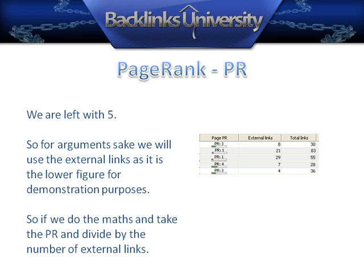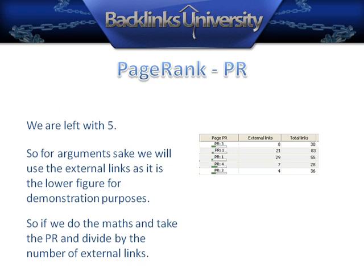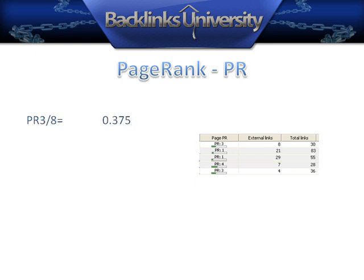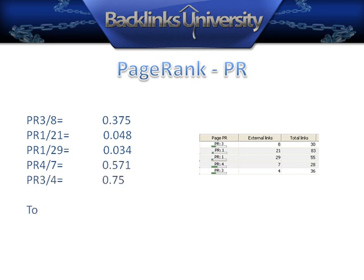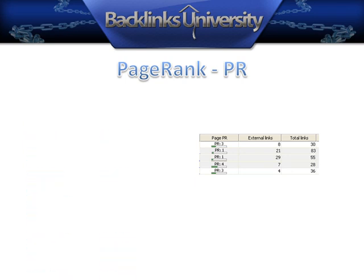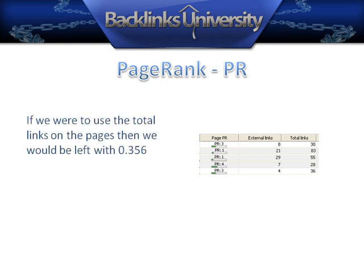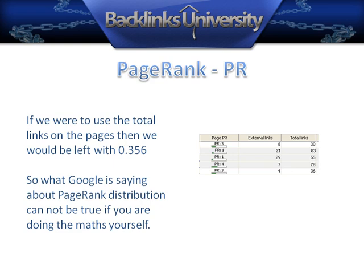So if we do the maths and take the PR and divide by the number of external links, as you can see the numbers just do not add up. If we were to use the total links on the pages, then we would be left with 0.356, which is nowhere near 4. So what Google is saying about PageRank distribution cannot be true if you were doing the maths yourself.